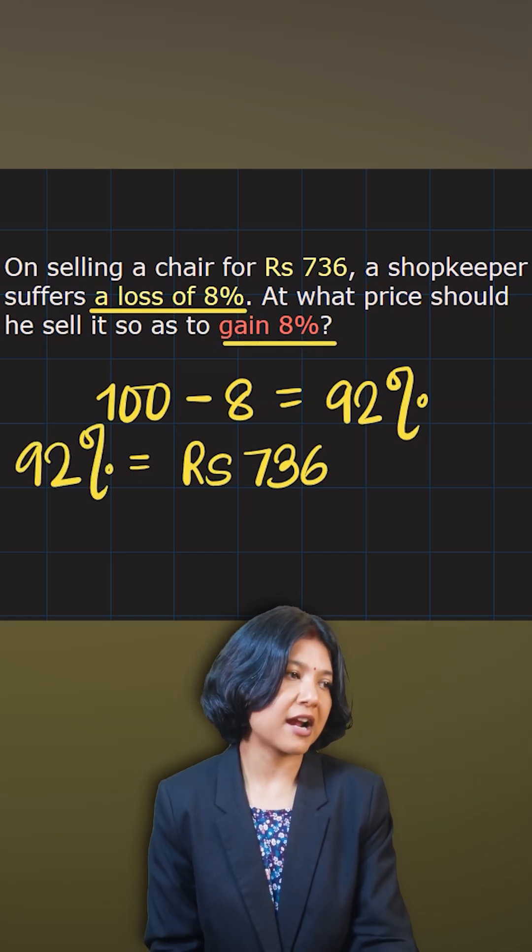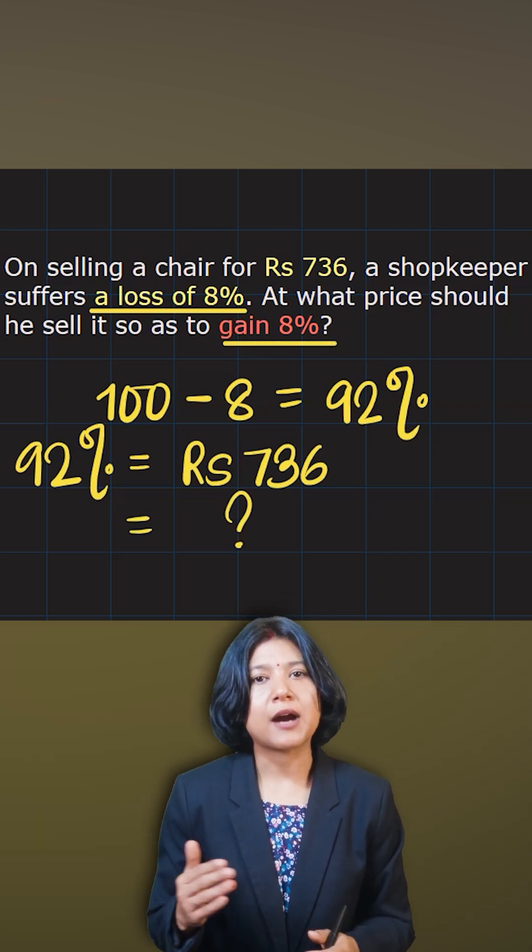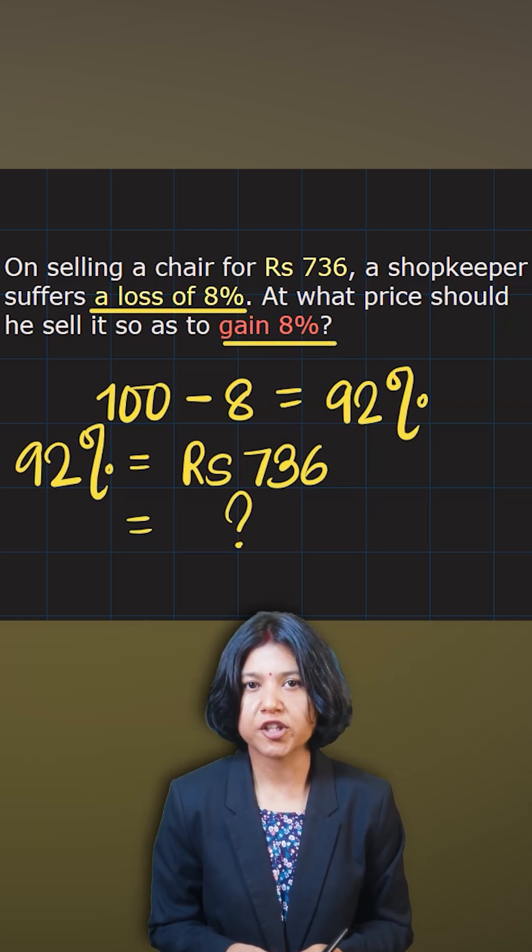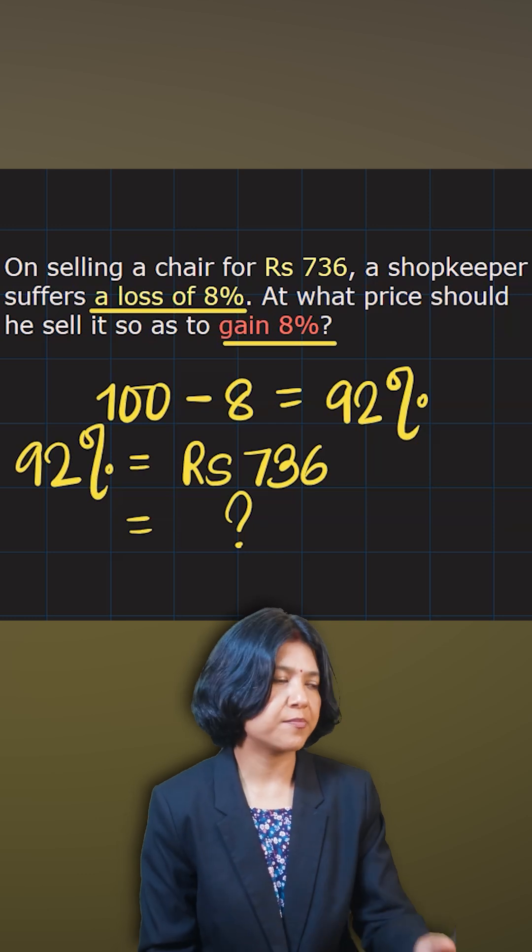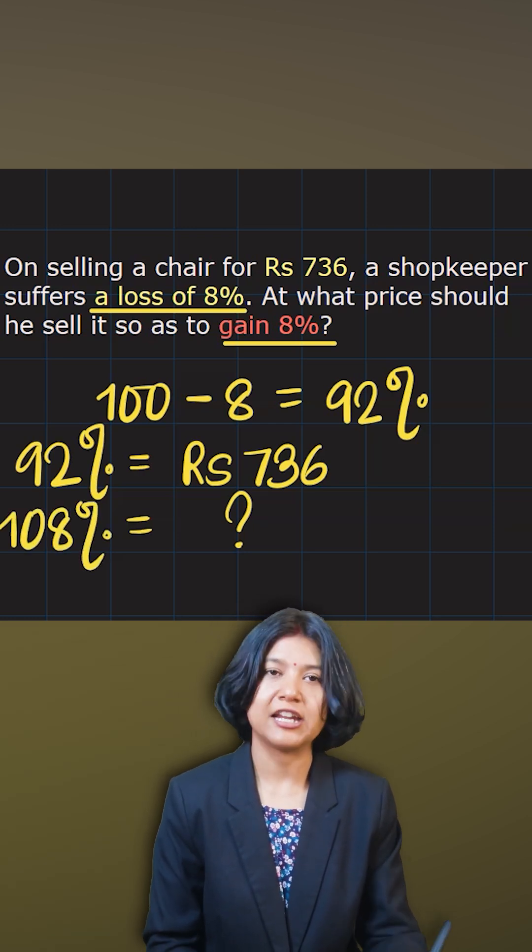Therefore 92% is rupees 736. The question wants you to find at what price to gain 8%. You want to mark the price 8% above your cost price. So cost price is always 100%. 100 plus 8, 108%.